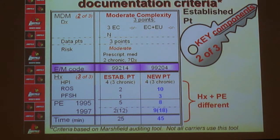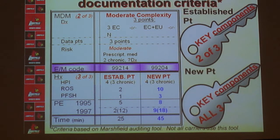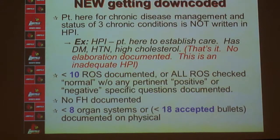Medicare doesn't state what the combinations have to be, but generally your medical decision-making drives the majority of documentation — it will be medical decision-making supported by history, or medical decision-making supported by physical exam. For a new patient, however, you must satisfy medical decision-making, history, and physical in order to support your level of service.